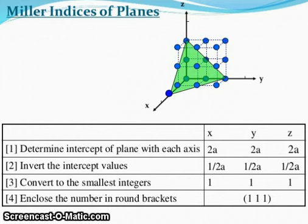Miller indices of plane you can see in this. Determine the intercept of plane with each axis: x = 2a, y = 2a, z = 2a. Invert the intercept values: 1/2a, 1/2a, 1/2a. Convert to the smallest integers: 1, 1, 1. Enclose the numbers in round brackets: (1, 1, 1).